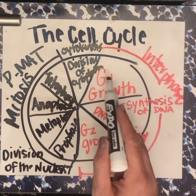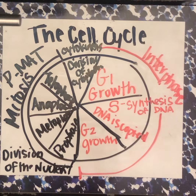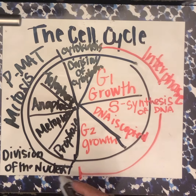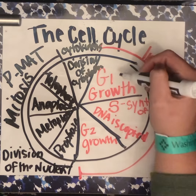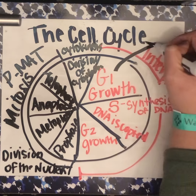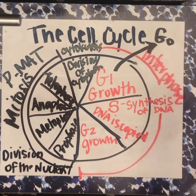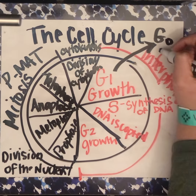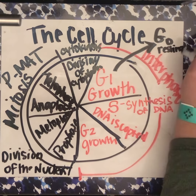If a cell does not need to replicate — and not all cells need to replicate all the time; we'd be huge if all of our cells replicated all the time — some cells in your body don't need to replicate. So if they don't need to replicate, they will come out of G1 and go into G0. G0 is just kind of resting, doing their job.